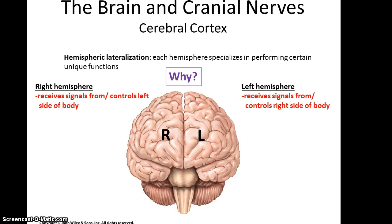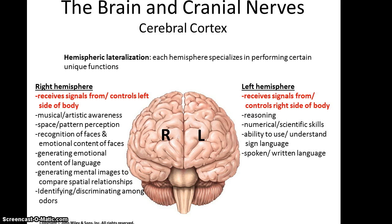There is what's referred to as hemispheric lateralization, which means the right side of our brain controls the left side of the body and the left side of the brain controls the right side of the body. But also, the right hemisphere has certain preferences for what functions it regulates, and the left hemisphere has its own preferences — it's not 100% to 0%, more like 75% to 25% or 60% to 40%. The right side has been linked to musical awareness, spatial pattern recognition, generating emotional content of language, and identifying and discriminating among odors. The left hemisphere has been linked to reasoning, numeric and scientific skills, and spoken and written language skills.